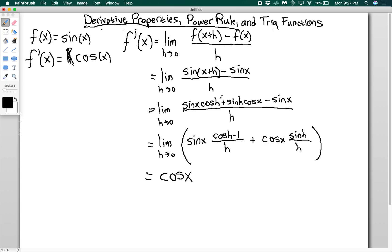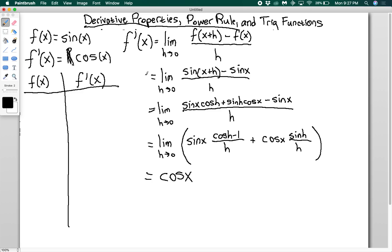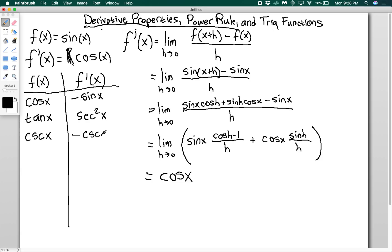You can do similar derivations for the other trig functions. Here's the list: the derivative of cosine of x is negative sine of x. The derivative of tangent of x is secant squared of x. The derivative of cosecant of x is negative cosecant x times cotangent of x. The derivative of secant of x is secant x times tangent of x. And the derivative of cotangent of x is negative cosecant squared of x.